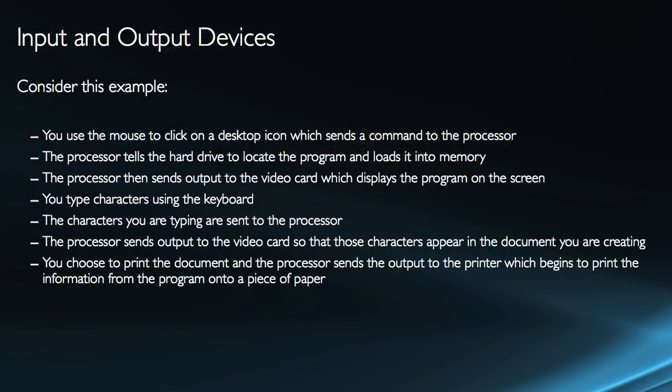Let's consider an example using these input-output devices. I use the mouse to click on a desktop icon — double-click — and it sends a command to the processor. The processor, using the location that this shortcut or icon is pointing to, tells the hard drive to locate the program. It locates the program, the program gets loaded into memory, and the processor then sends output to the video card, which displays the program on the screen.